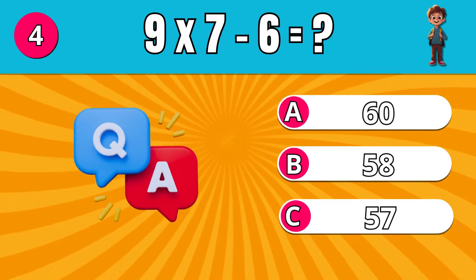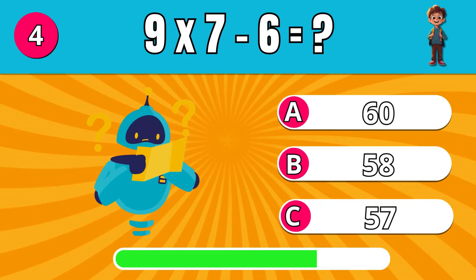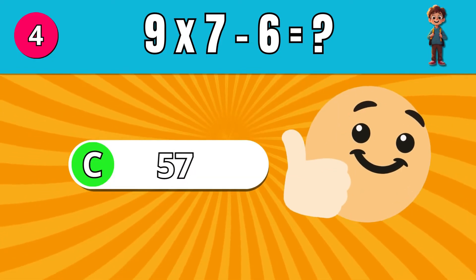Subtract 6 from the product of 9 and 7. C, 57.